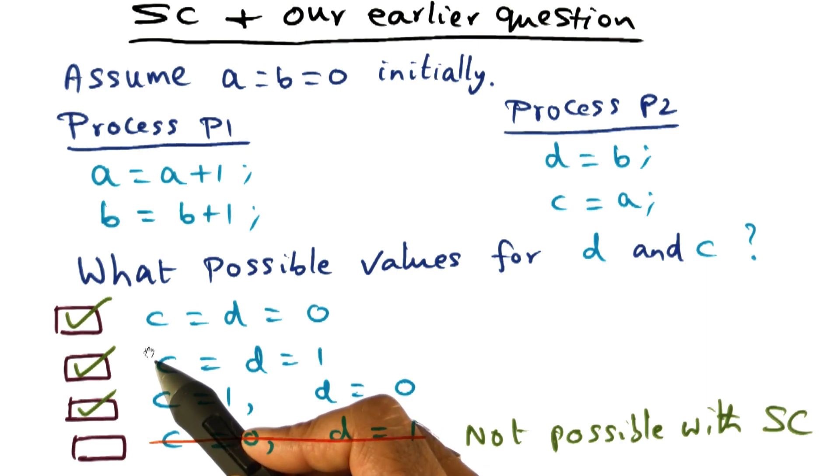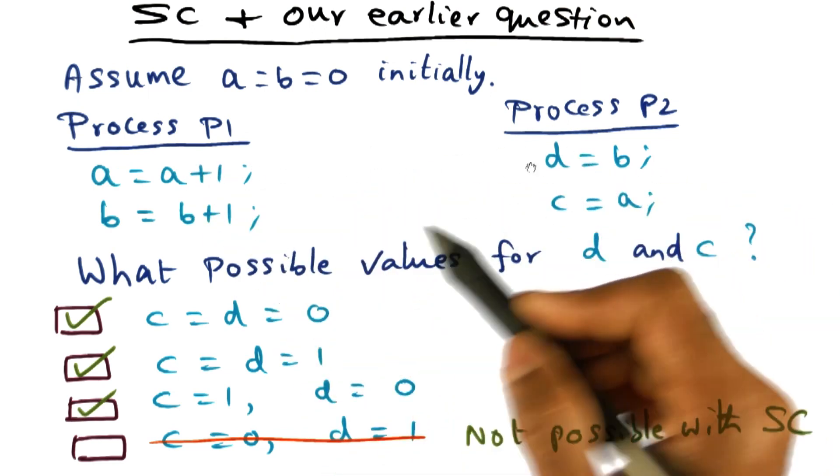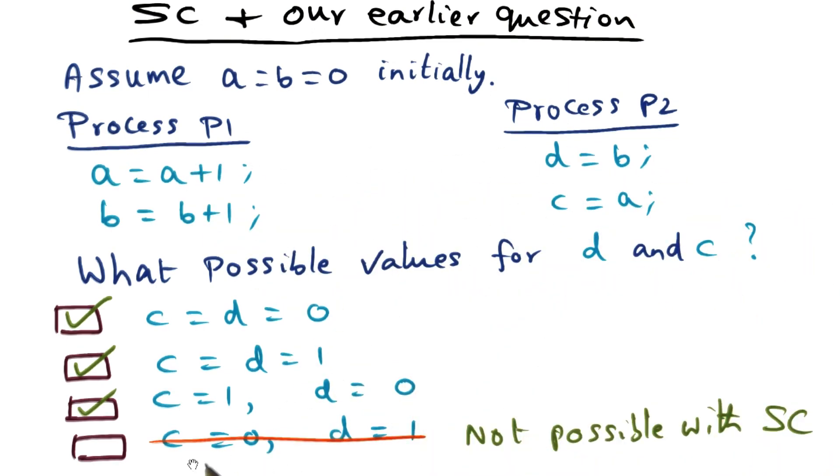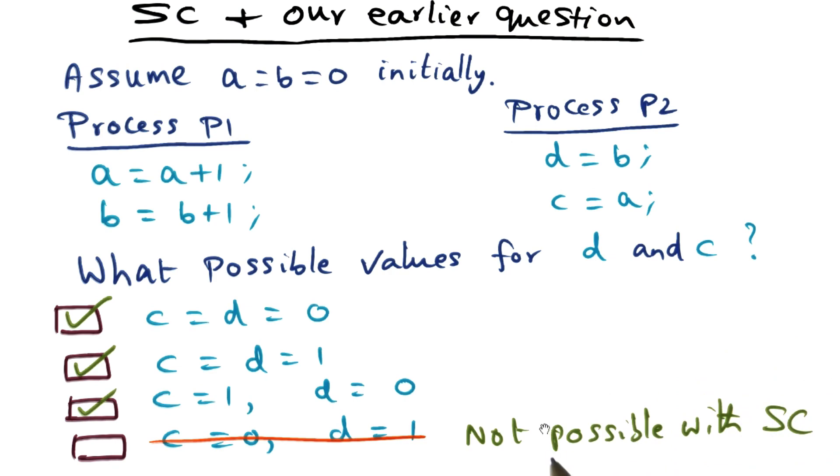and as we illustrated earlier, all of these are just interleaving of these memory accesses on P1 and P2. But the fourth one is not possible with sequential consistency because there's no interleaving of these memory accesses that will result in this particular outcome.